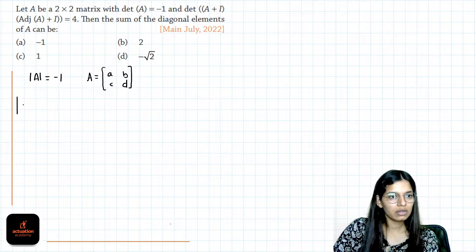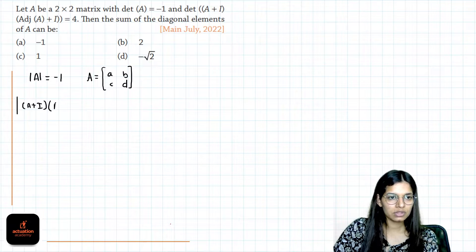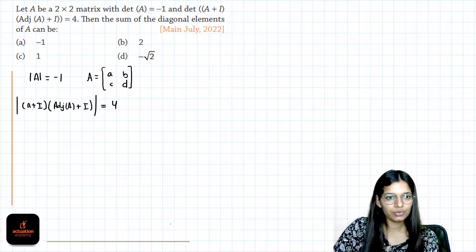Next condition is determinant of A plus I times adjoint of A plus I, all determinant is 4.